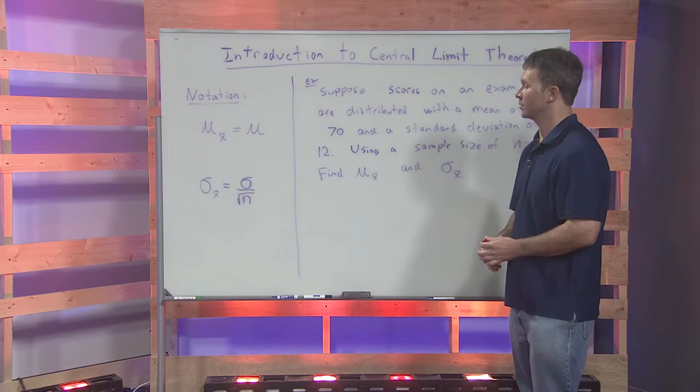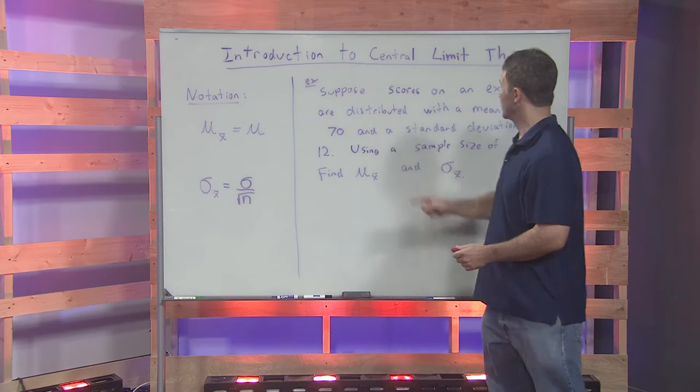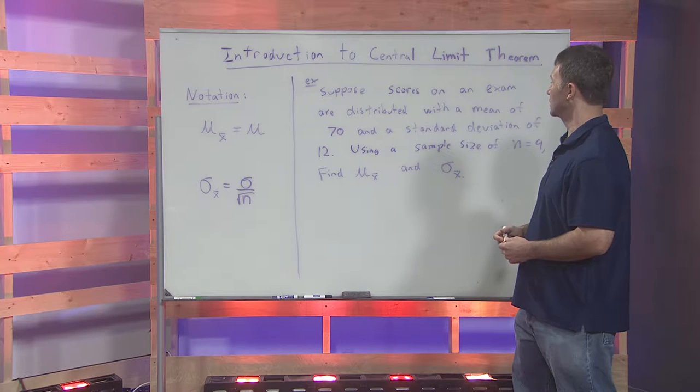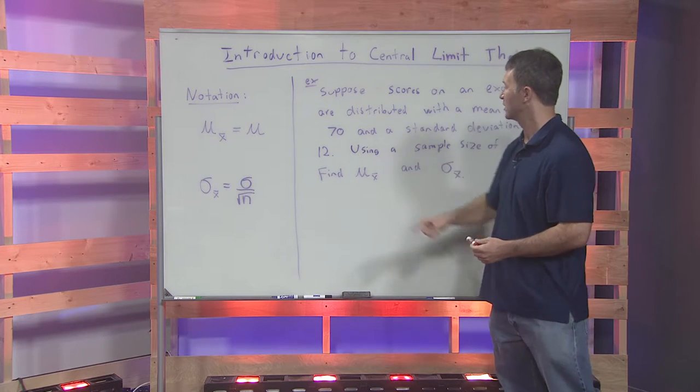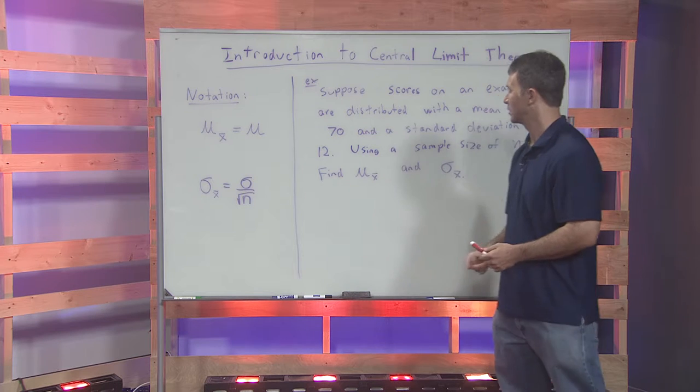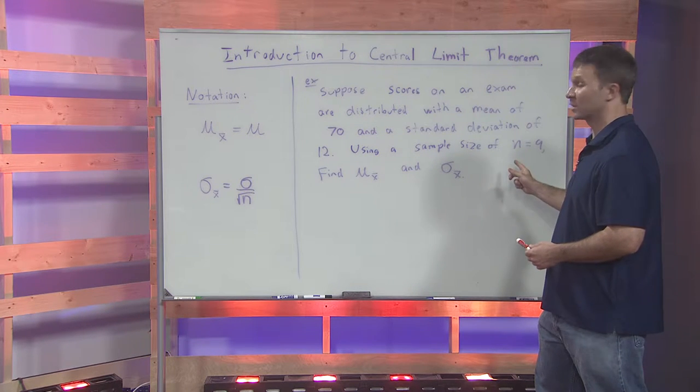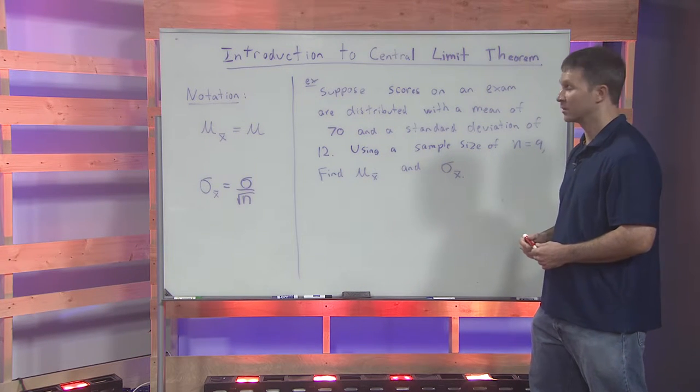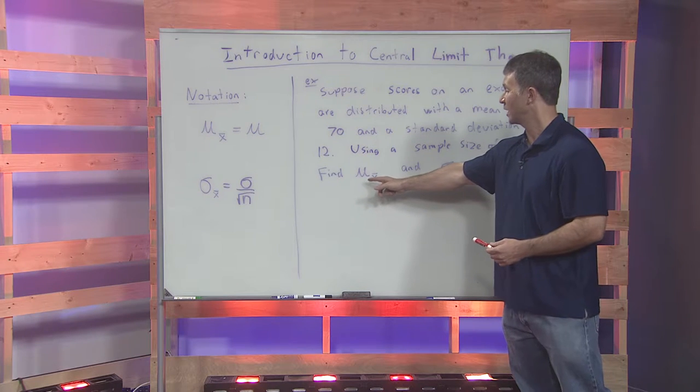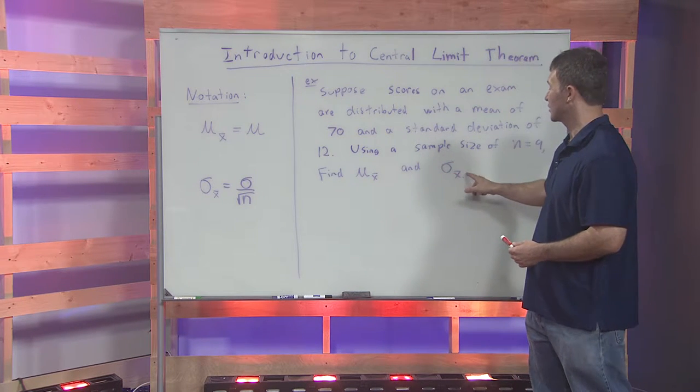So here's the example. Suppose scores on an exam are distributed with a mean of 70 and a standard deviation of 12. Using a sample size of n equals 9, find mu sub x bar and sigma sub x bar.